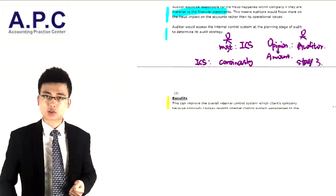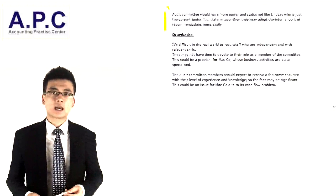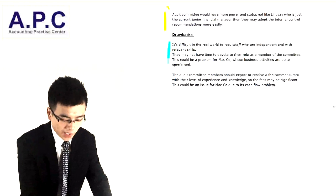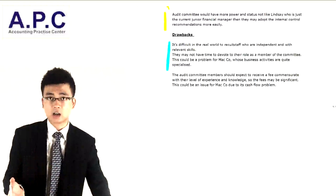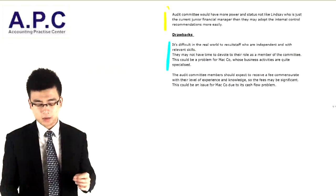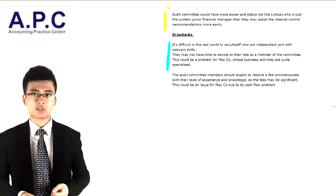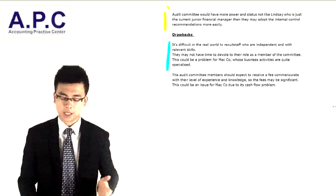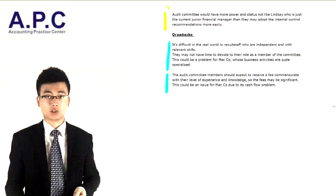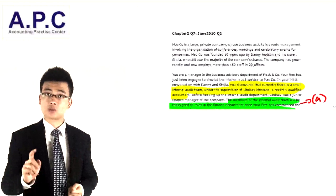The key to Part B is focusing on whether outsourcing will save time, save money, and hence reduce the audit fees. For Part D number 2, audit committee drawbacks: firstly, it's very difficult to recruit independent staff with relevant expertise — over time, committee members may lose independence by colluding with management. Secondly, it's quite expensive to recruit this kind of expert. So that covers the overall question — Question 2 from the June 2010 P7 exam.